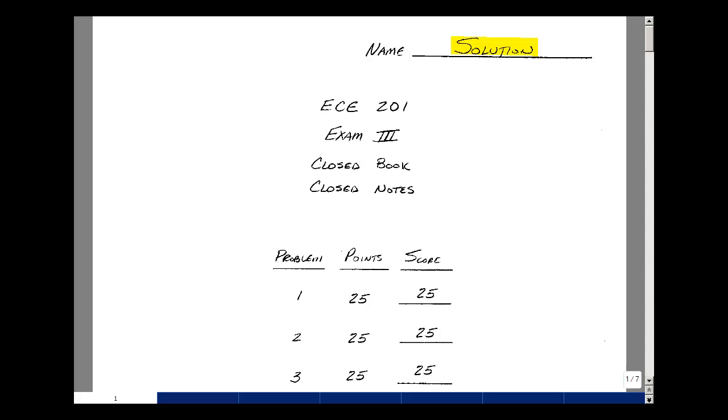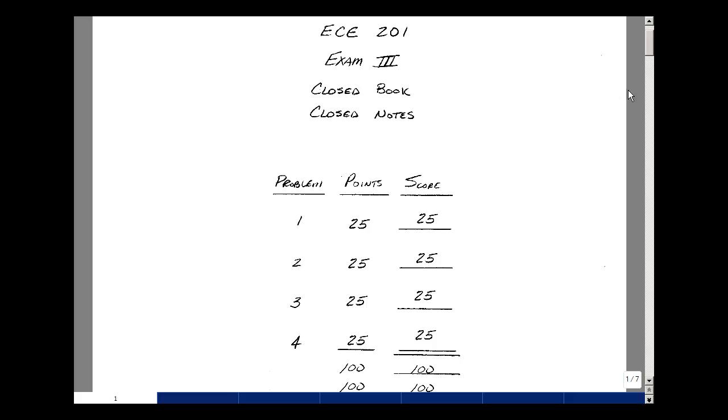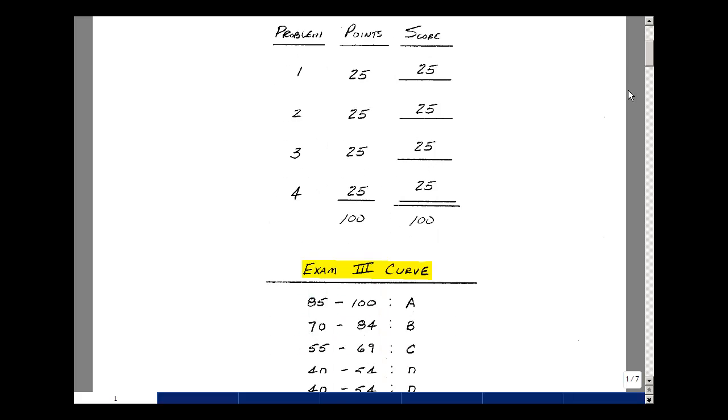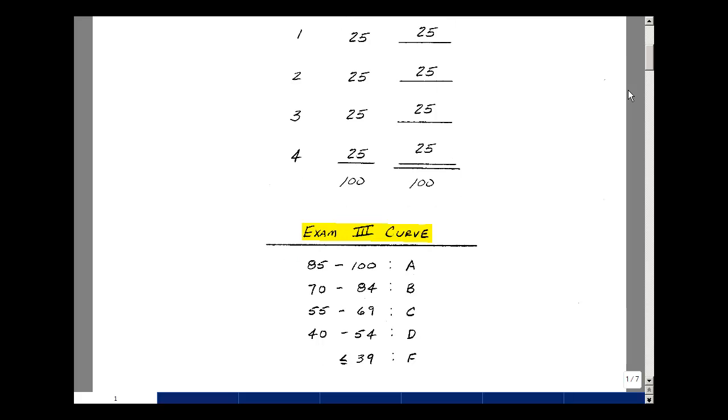This lesson deals with the solution of exam 3. You can find this exam solution near the end of the EC201 ebook. This exam was a four-problem test, with each problem being worth 25 points. This is the actual exam I used when I taught the course recently. Based on the average and standard deviation, this was the curve for exam 3.